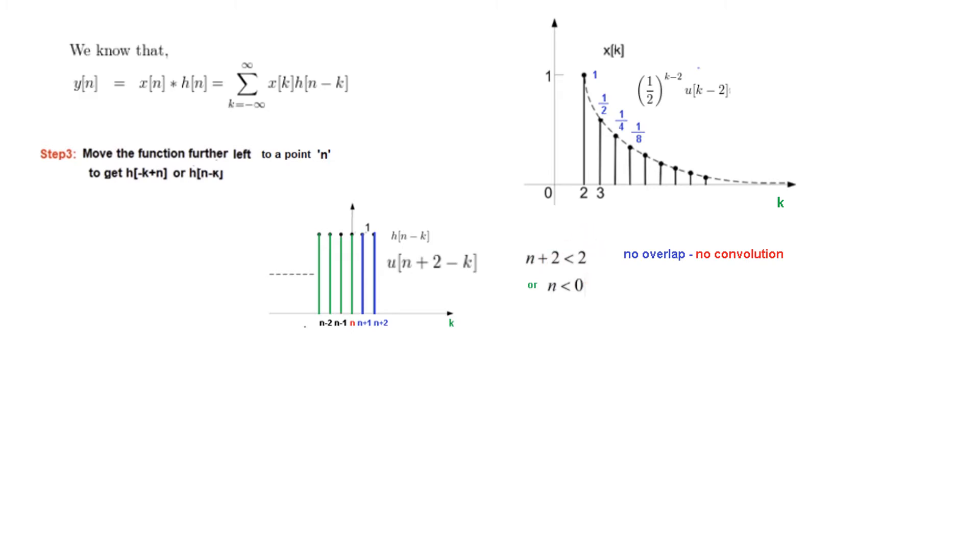And from here we can also say that n is less than 0. When you take on this side, then n will be 2 minus 2, that is 0. So n less than 0. So this is the condition of no overlap.